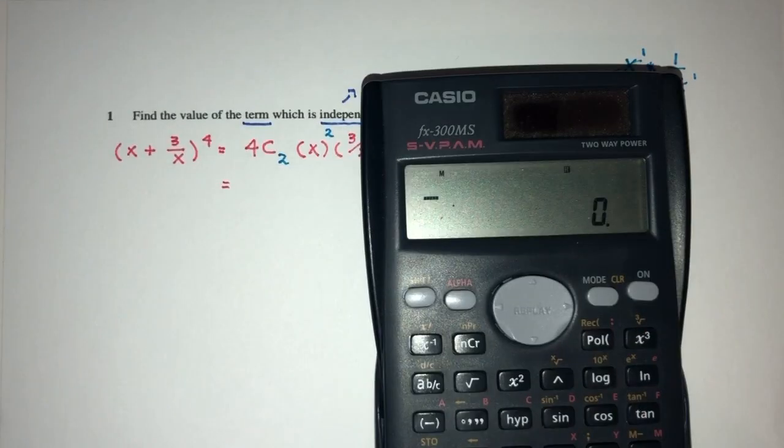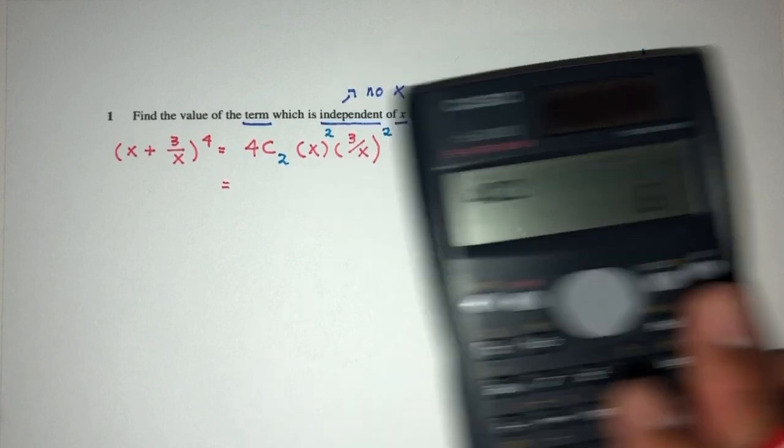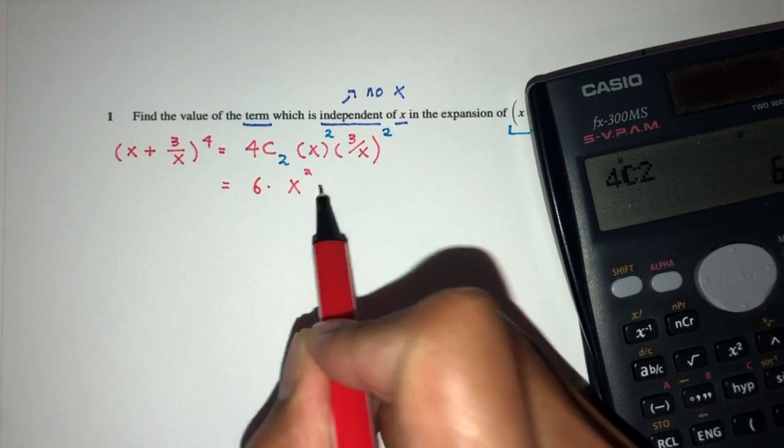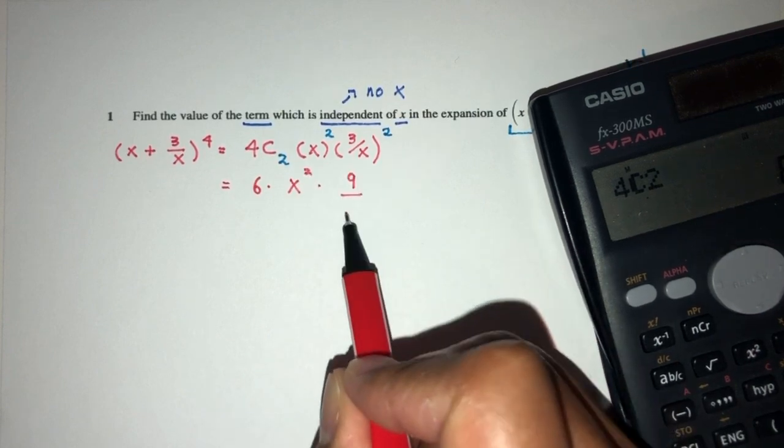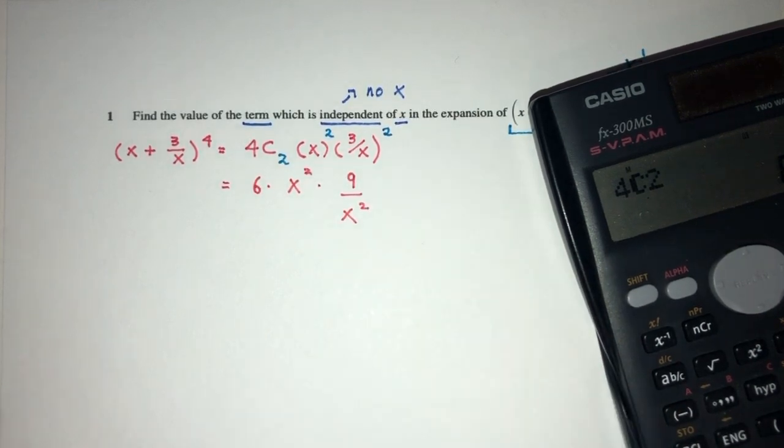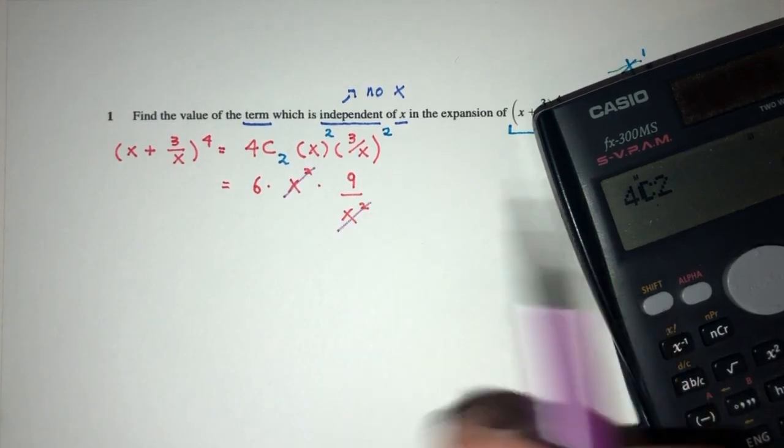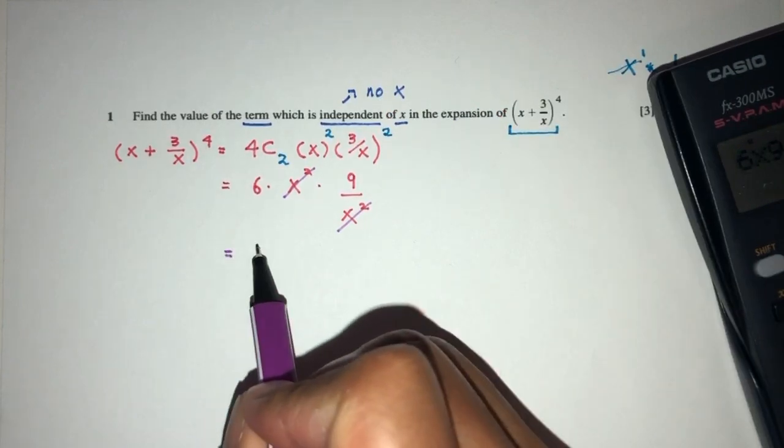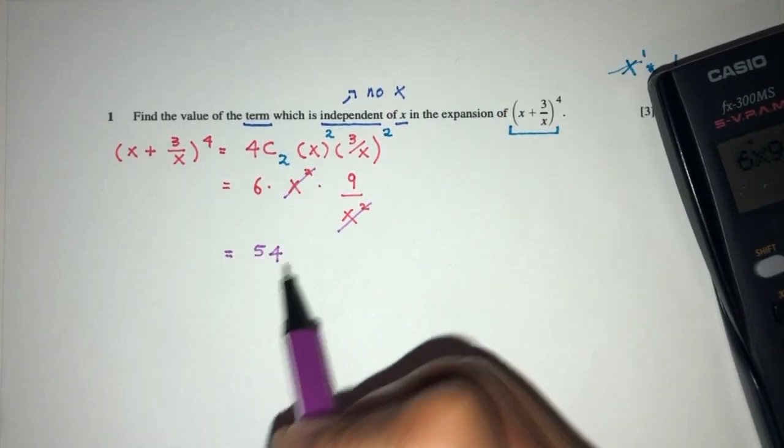So 4 choose 2 is 6 times x squared. This will be 9 over x squared. Now you can see clearly that these two will cancel out and 6 times 9 will be the term which is independent of x.